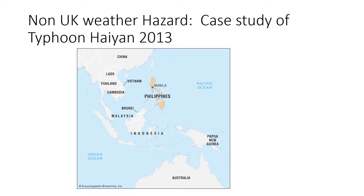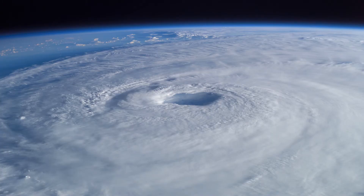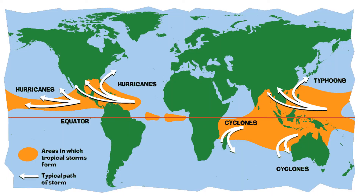This is a satellite image taken of the typhoon as it develops. The storm actually got so big that it was over 500 miles across. You can see the clear eye in the center of the storm, and the strongest winds form in the eye wall surrounding the eye.